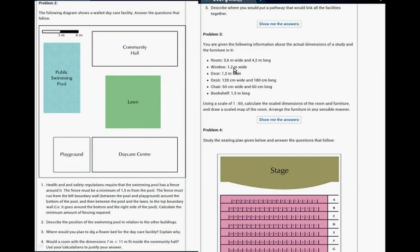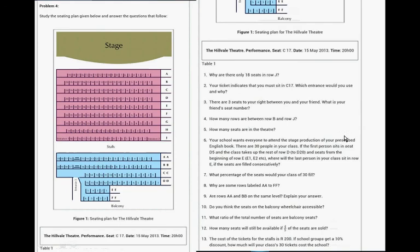You are given the following information: A room that's 3.6 meters by 4.2 meters, the window is 1.2 meters, the door is 1.2 meters, the desk is 120 centimeters by 180 centimeters, the chair is 60 by 60, and the bookshelf is 1.5 meters. Use a scale, draw it, and arrange the furniture in a sensible manner.